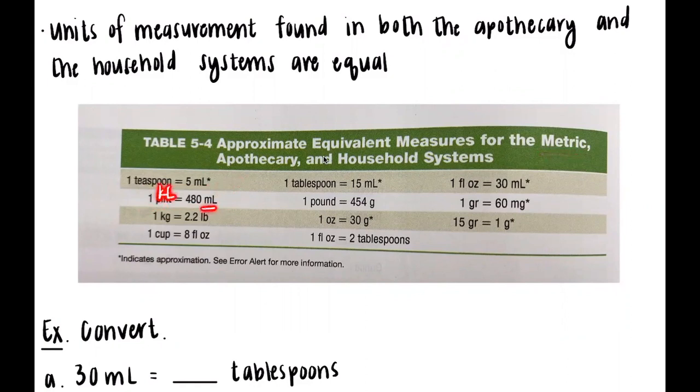We talked about this in previous chapters. Here you can see there is an asterisk and it indicates an approximation. Some of these are ongoing decimals, but here they just provided the approximation of it.